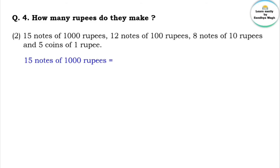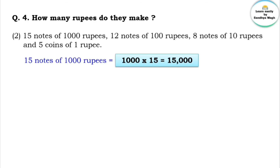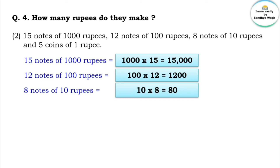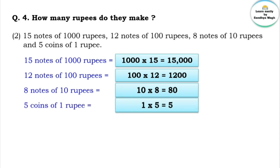1,000 multiplied by 15 equals 15,000. 100 multiplied by 12 equals 1,200. 10 multiplied by 8 equals 80. 1 multiplied by 5 equals 5.